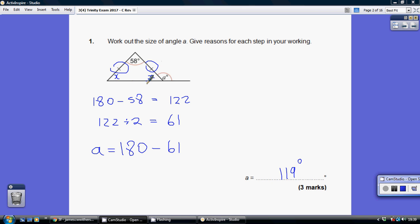Once we've established that this angle here is 61, it's easy to work out A because angles in a straight line add up to 180, so 180 take away 61 gives us 119 degrees for angle A.